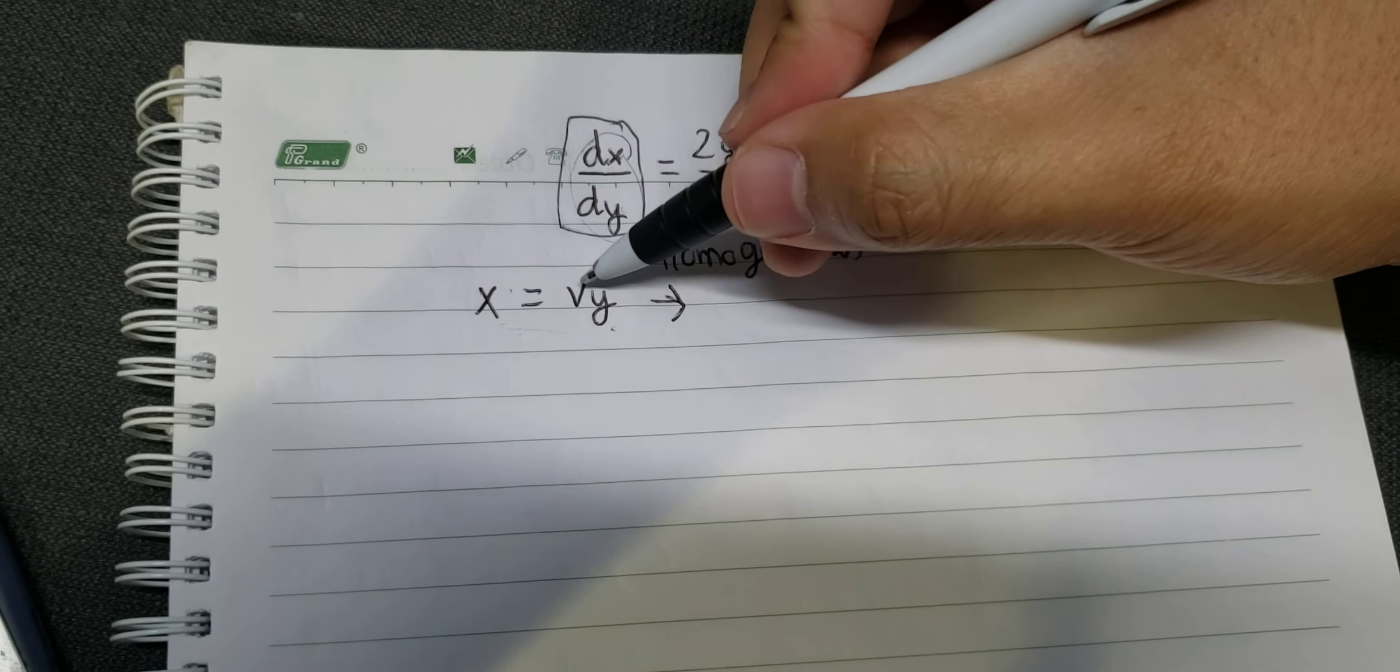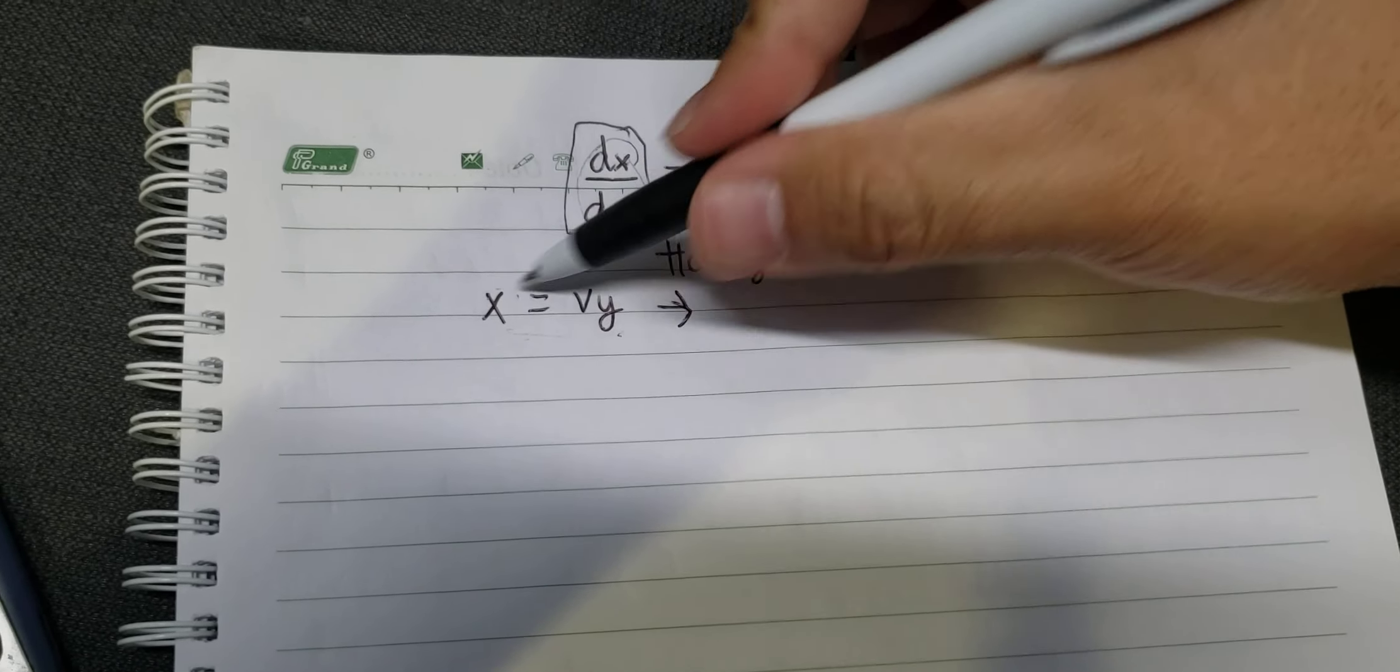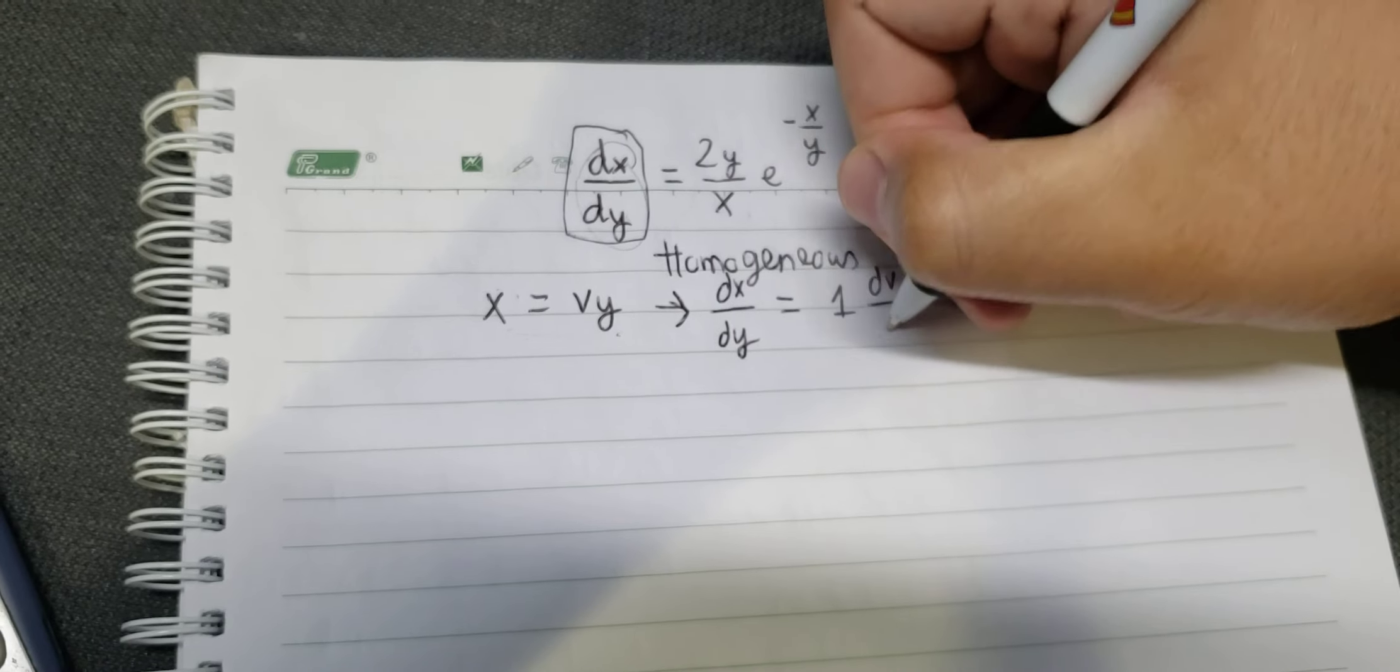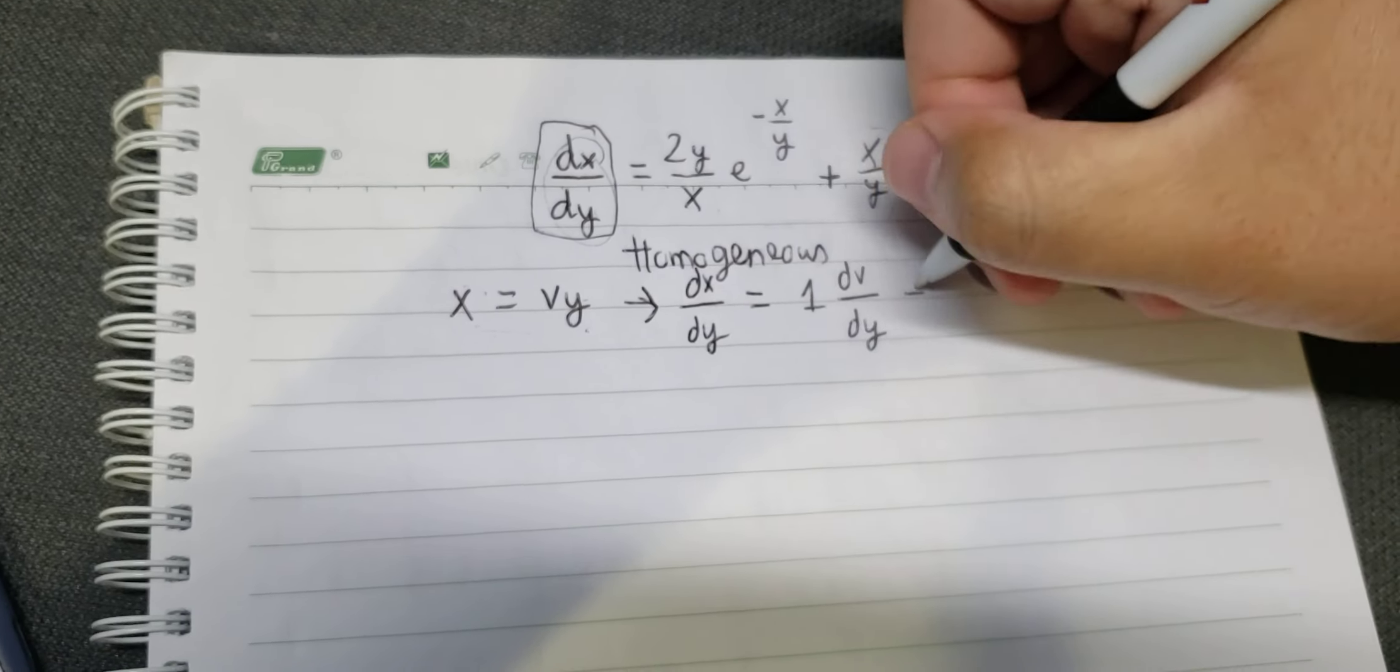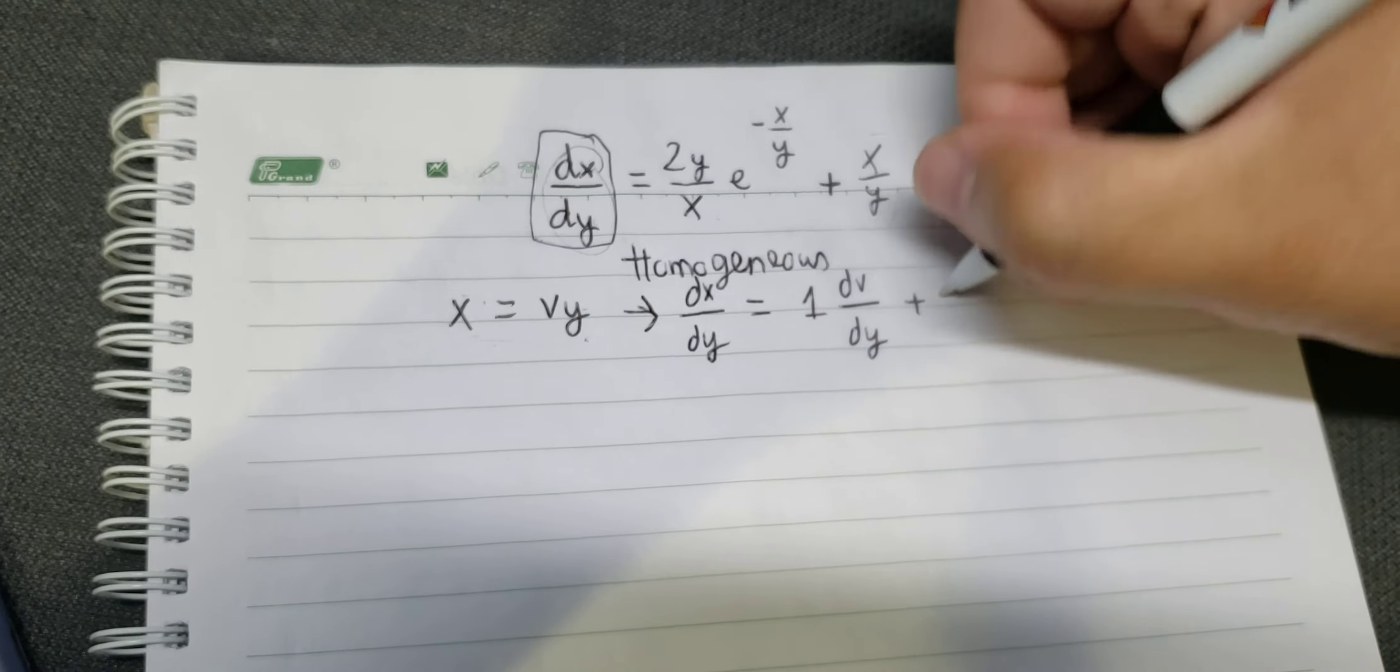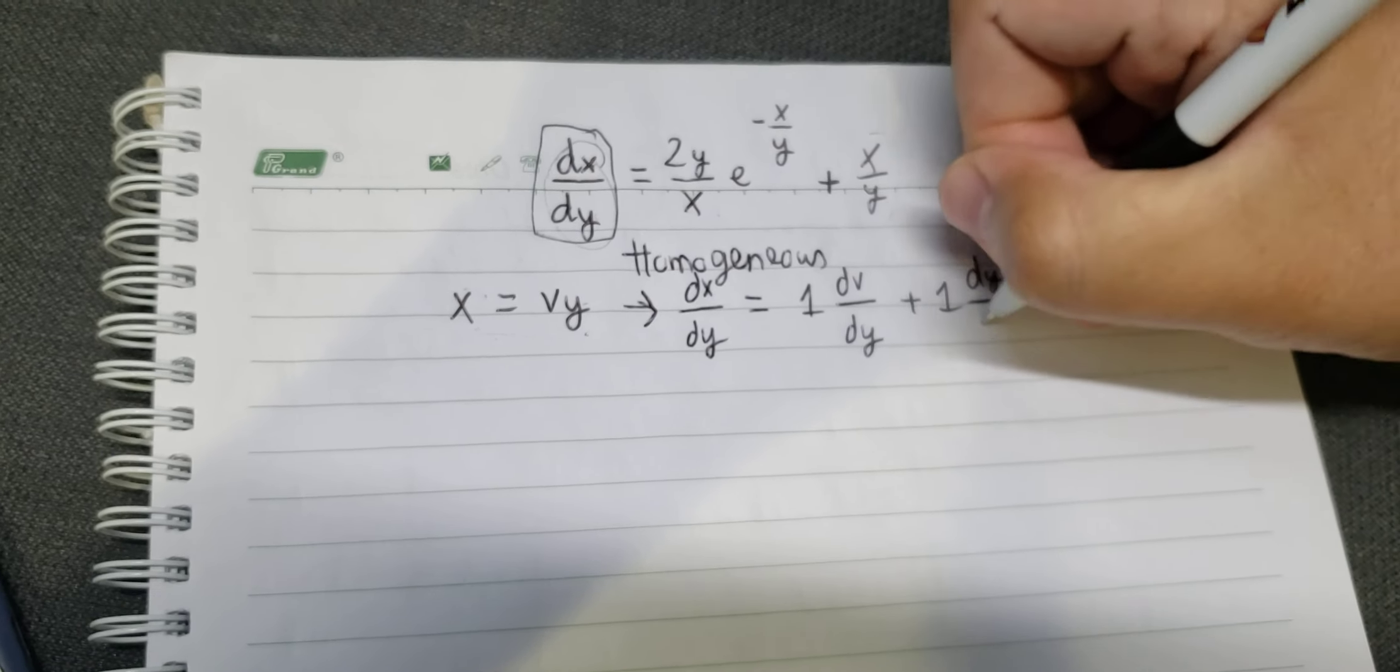Taking the derivative, dx/dy equals v times 1 plus y times dv/dy. We have v with 1, then dv/dy, and y with 1, then dy/dy.